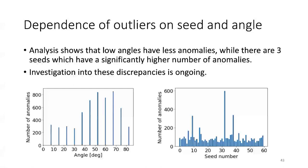Looking at the detected outliers as a function of angle and seed number: low angles tend to have fewer anomalies, high angles more. Three particular seeds show significantly higher numbers of anomalies. The ABP team is investigating these discrepancies to better understand why this might be the case.